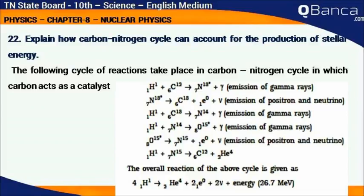The overall reaction of the above cycle is given as 4H11 gives HE4 plus 2 electrons plus 2 positrons plus neutrinos plus energy of 26.7 million electron-volts.